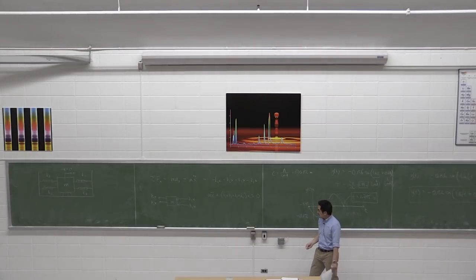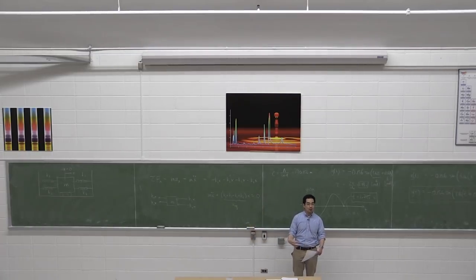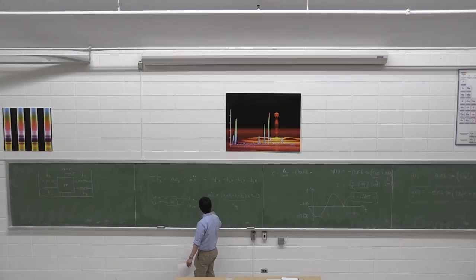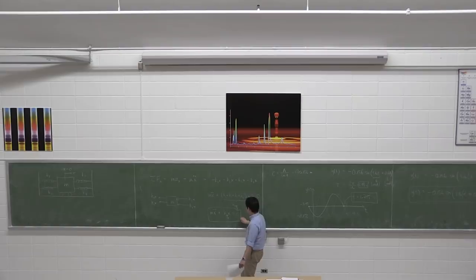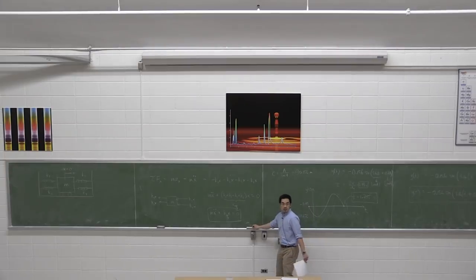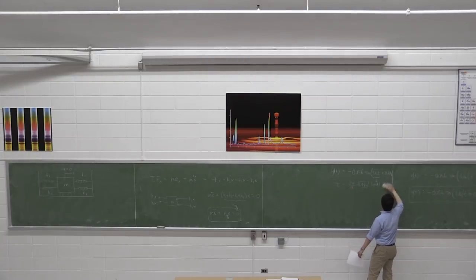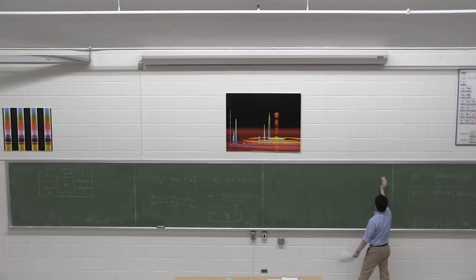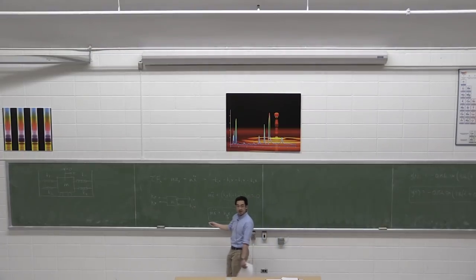So I can write m·ẍ + (K1 + K2 + K3 + K4)·x = 0. I can group all the spring constants together into an equivalent spring constant. So m·ẍ + K_eq·x = 0. These are springs that are in parallel — they all act independently, attached to the mass at different locations, and their spring constants simply add: K_eq = K1 + K2 + K3 + K4.